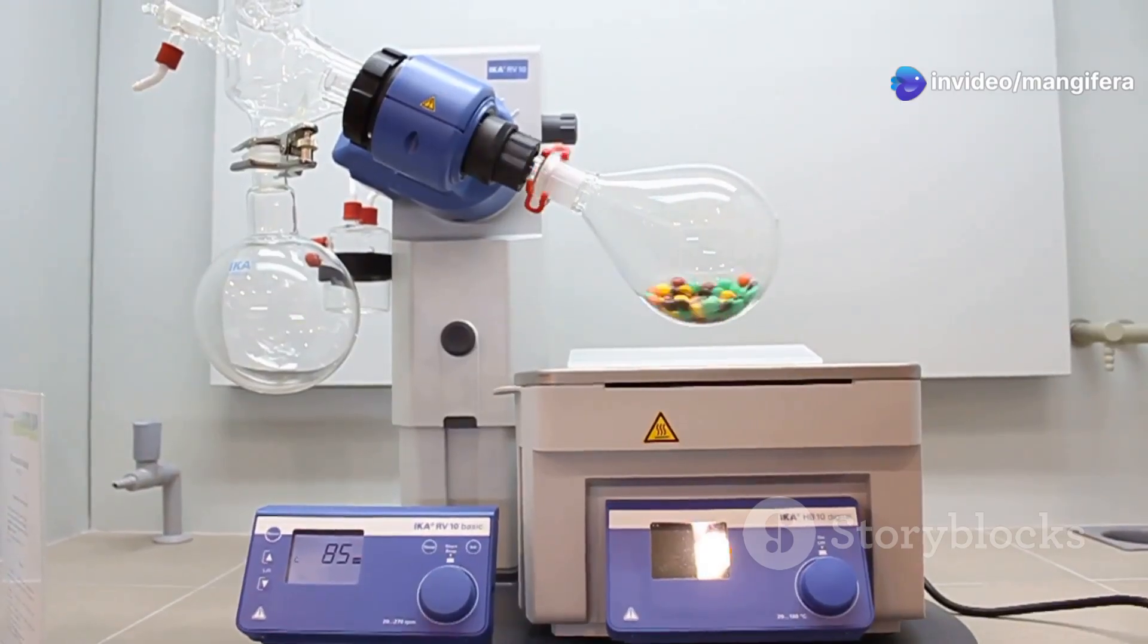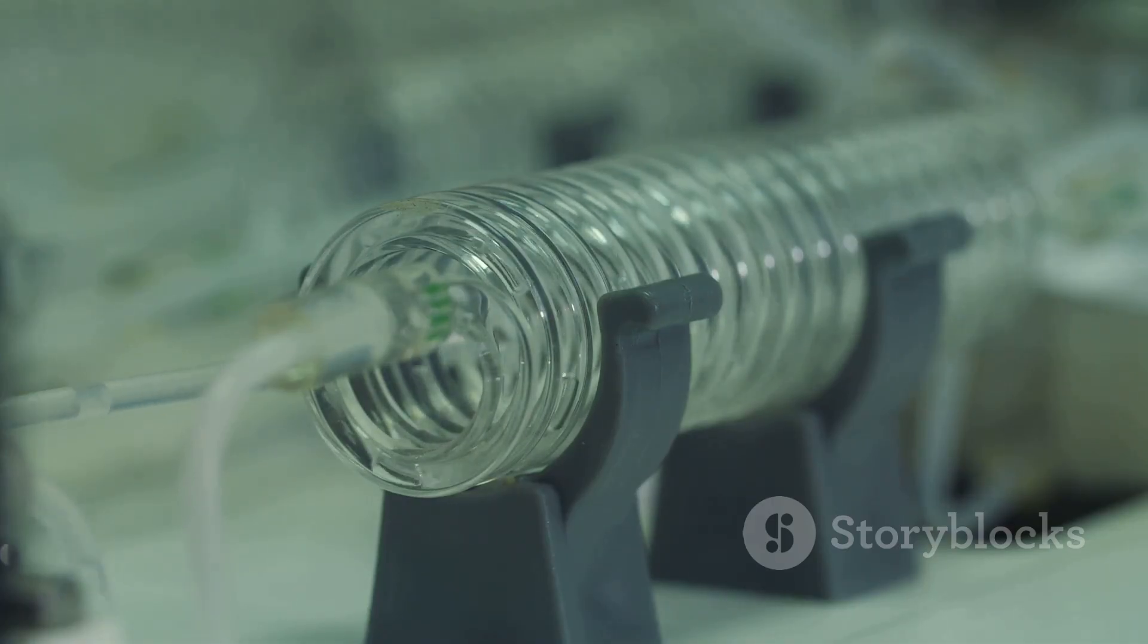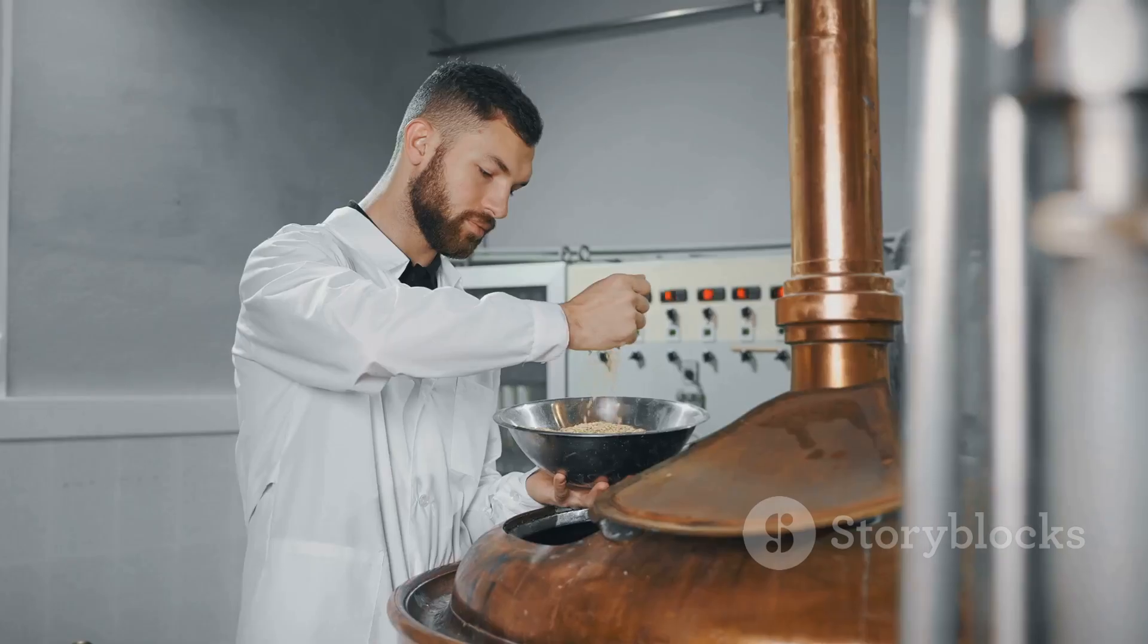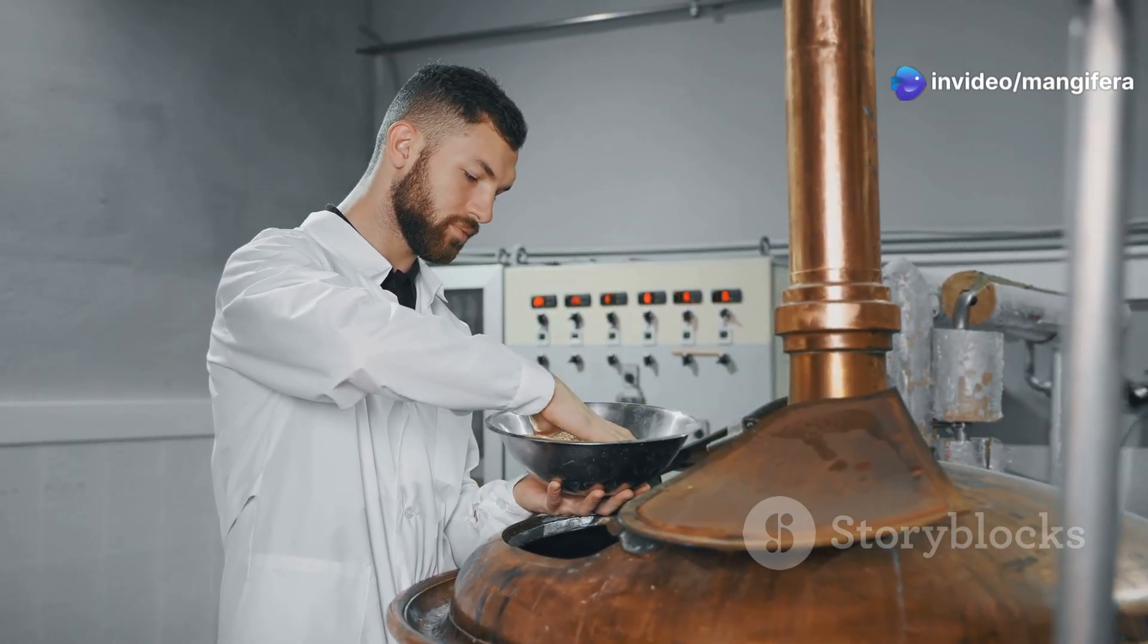But what about the apparatus? A typical azeotropic distillation setup looks similar to a regular distillation apparatus but has some key differences. You'll need a distillation column, a condenser, a receiver, and of course, the entrainer.